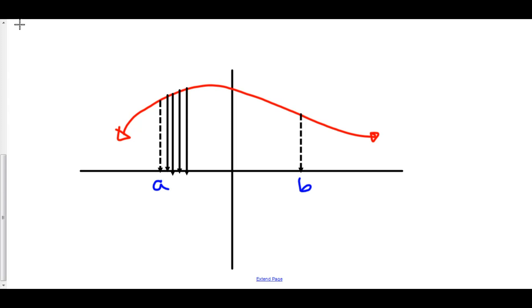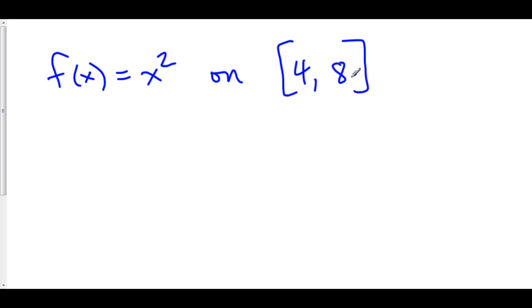Now, let's take a look at an example. Let's find the average value of f of x equals x squared on the interval from 4 to 8. So, we use the average value of a function formula, which is f average equals 1 over b minus a, so it's 1 over 8 minus 4, times the integral from a to b of f of x, which is x squared dx.